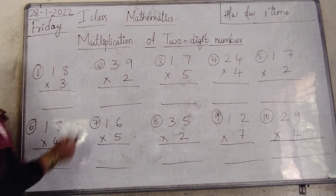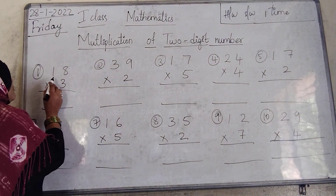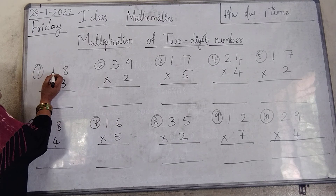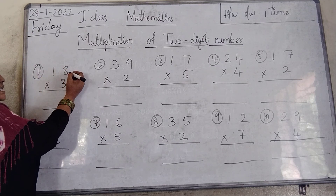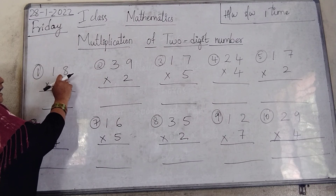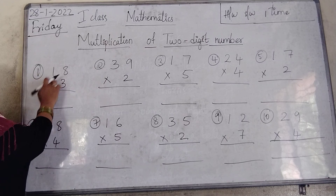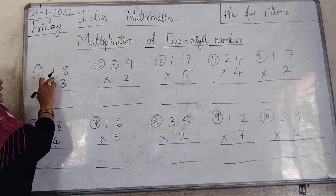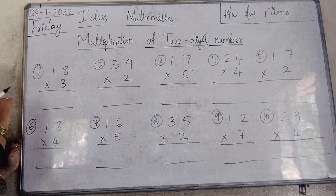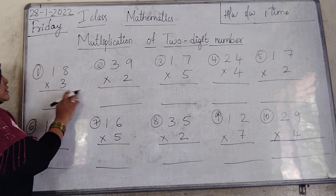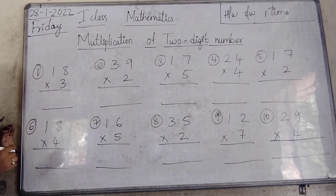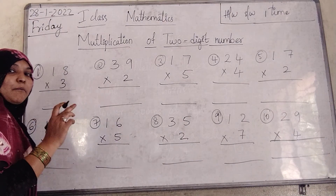Multiplication of two digit number means, see here, first one: 18 into 3. All of you know this is the 10th place and this is the 1st place. Which number is there in 1st place? It is 8. Now we are writing here 18 into 3. Which table do we have to use here? 3 table. 3 table we are using here. All of you should write the tables in your margin.